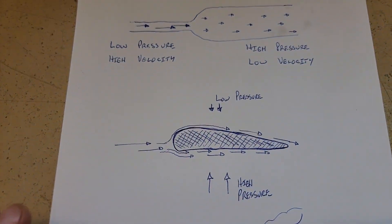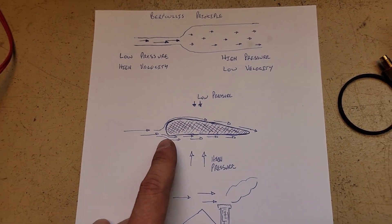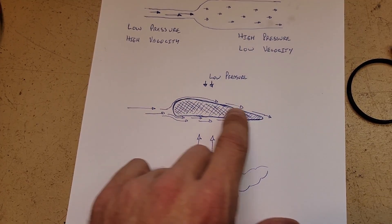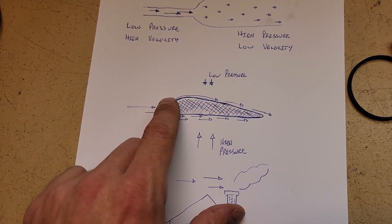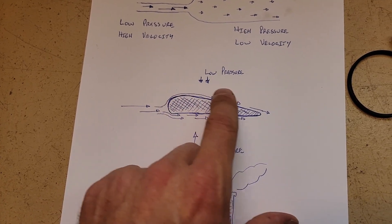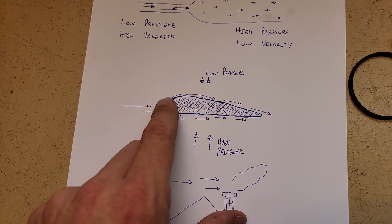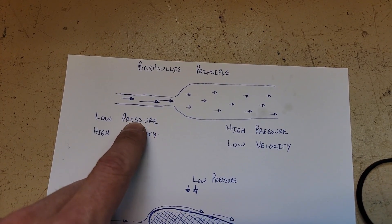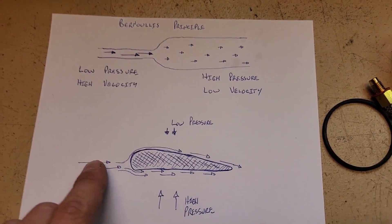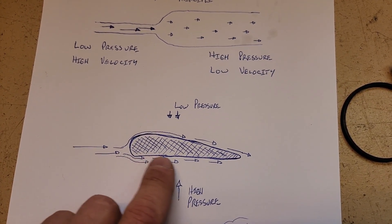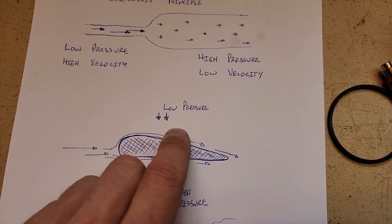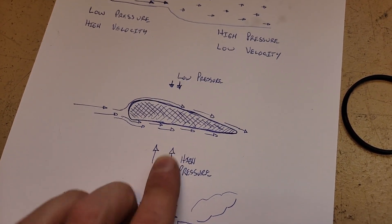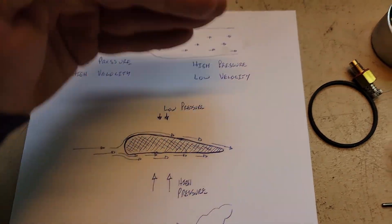Now that we understand that, let's look at some real world examples of where the principle of Bernoulli is applied. Let's look at an airfoil — a cross section of an airplane wing. The airfoil is designed so that the air moving over the top of the wing has to travel a further distance than the air moving underneath, and therefore has to travel quicker over the top. High velocity, low pressure; low velocity, high pressure. We have lower velocity air moving underneath the wing and higher velocity air moving faster over the top, which creates high pressure underneath and low pressure on top — which lifts the aircraft up.